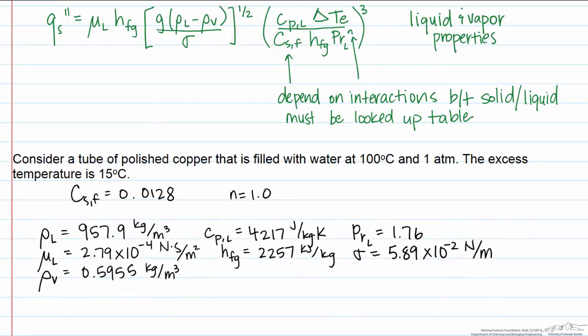Let's describe what these properties are. We have the density of the liquid as well as its heat capacity, Prandtl number, and viscosity. We have the heat of vaporization. We have the surface tension, and finally we have the density of the vapor.